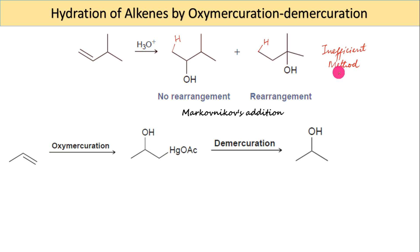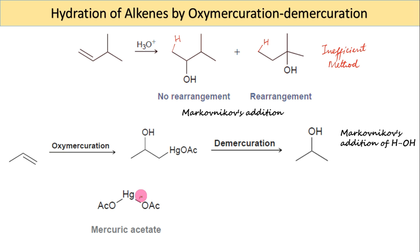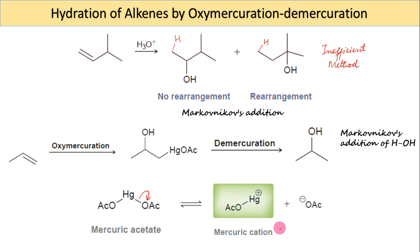One of the oldest and perhaps best-known methods is called oxymercuration-demercuration. To understand this process, let us explore the reagents employed. The process begins when mercuric acetate dissociates to form a mercuric cation. This mercuric cation is a powerful electrophile and is subject to attack by a nucleophile, such as the pi-bond of an alkene.